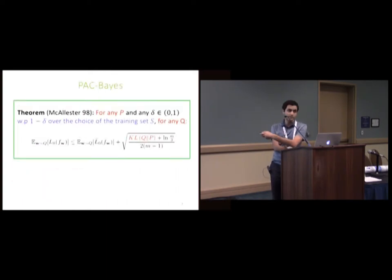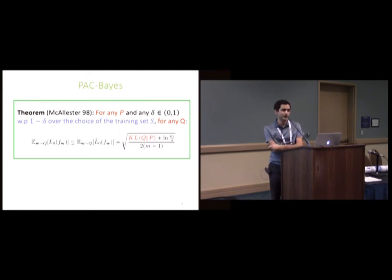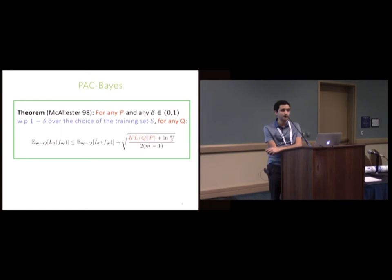I'm using this theorem on PAC-Bayes, which is not tight but gives me what I want, just to show how simple it is to get the bound. This theorem says the loss on the distribution can be bounded by the loss of the posterior on the training set plus the KL term divided by the number of training samples.